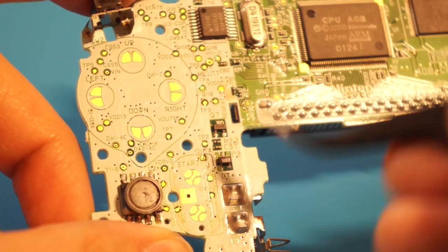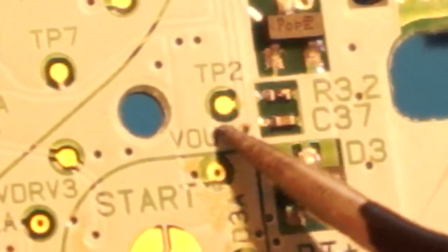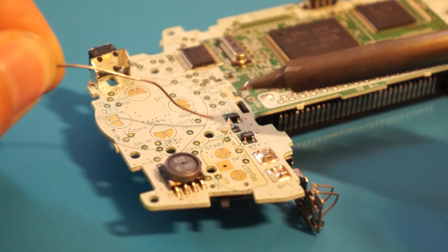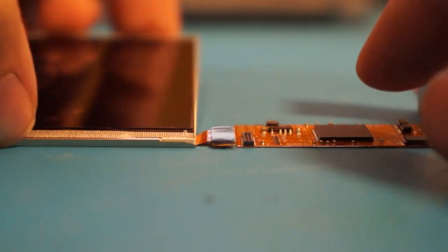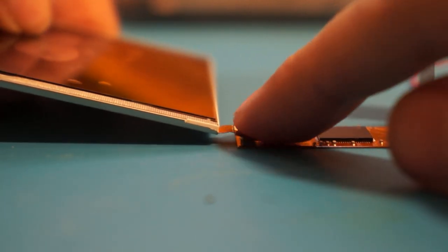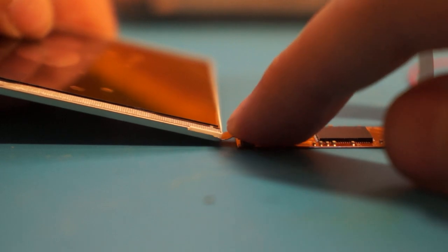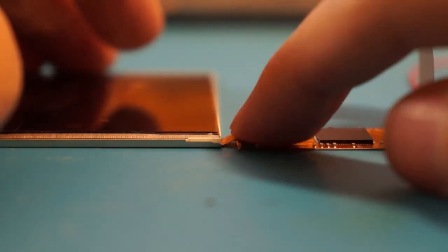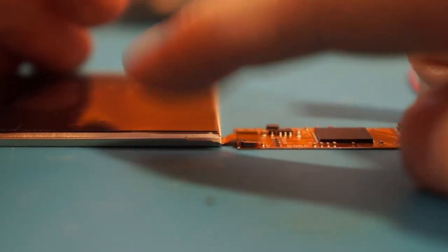Apply solder to the test pad labeled TP2 on the Gameboy Advance main board as shown. This will connect to the select wire later on in the install. Lay the IPS display flat on your workspace. Carefully line up the small FPC connector and press it firmly into place. Take extra precaution to check alignment as this part is very fragile and the wrong alignment could damage the connector.